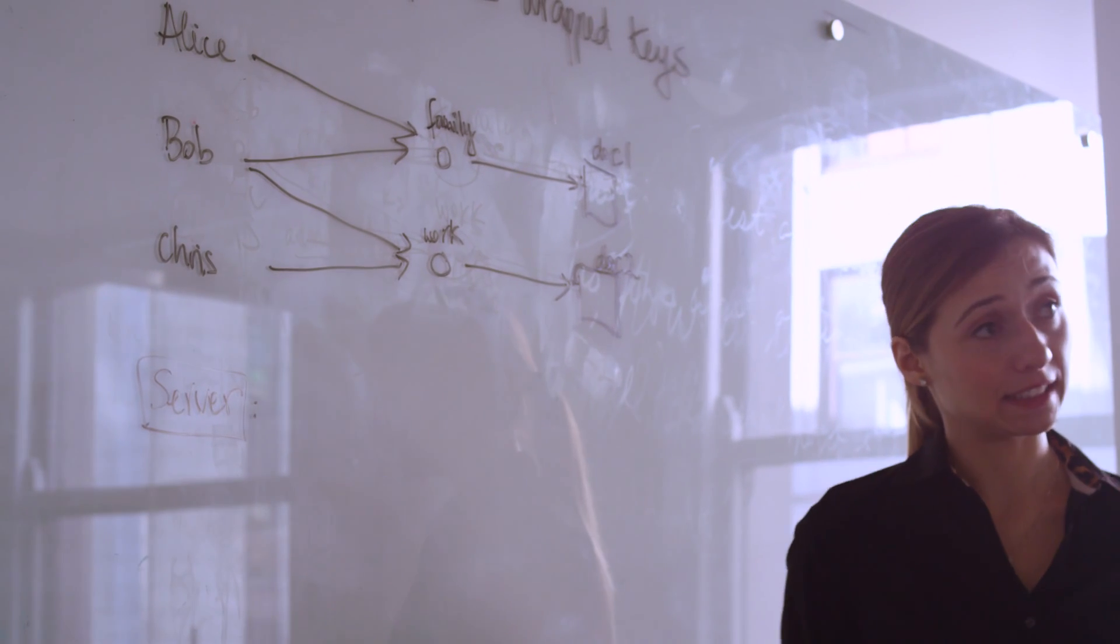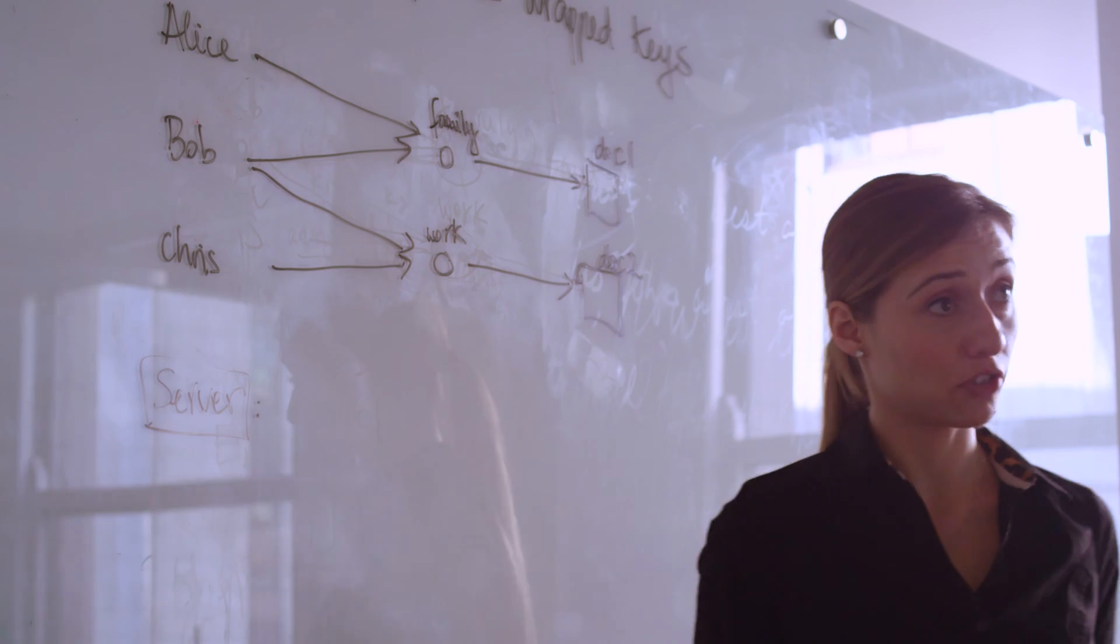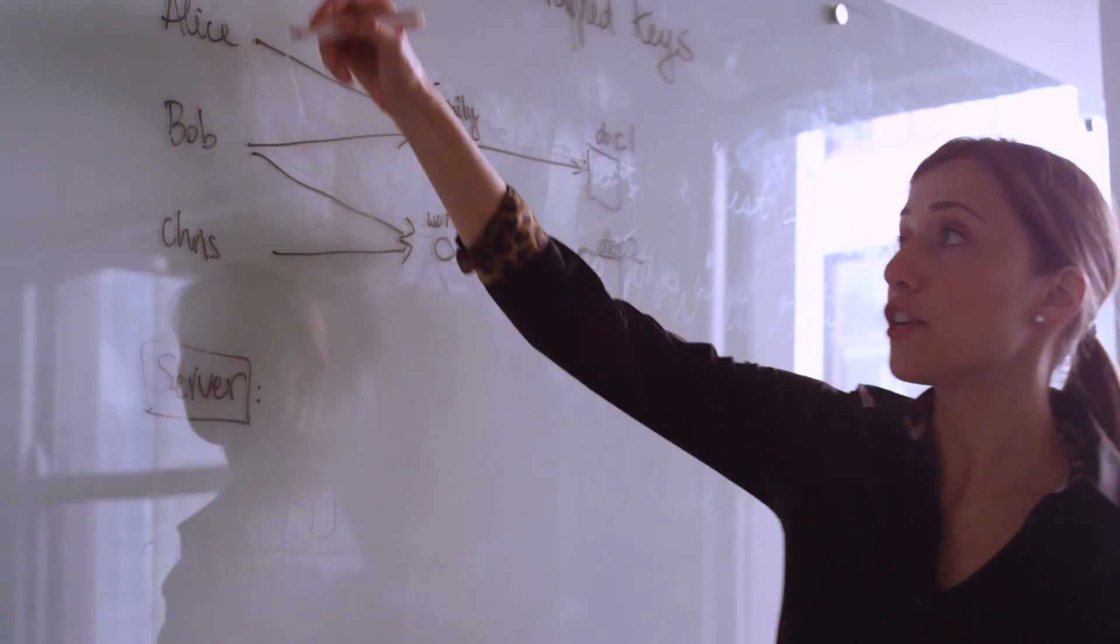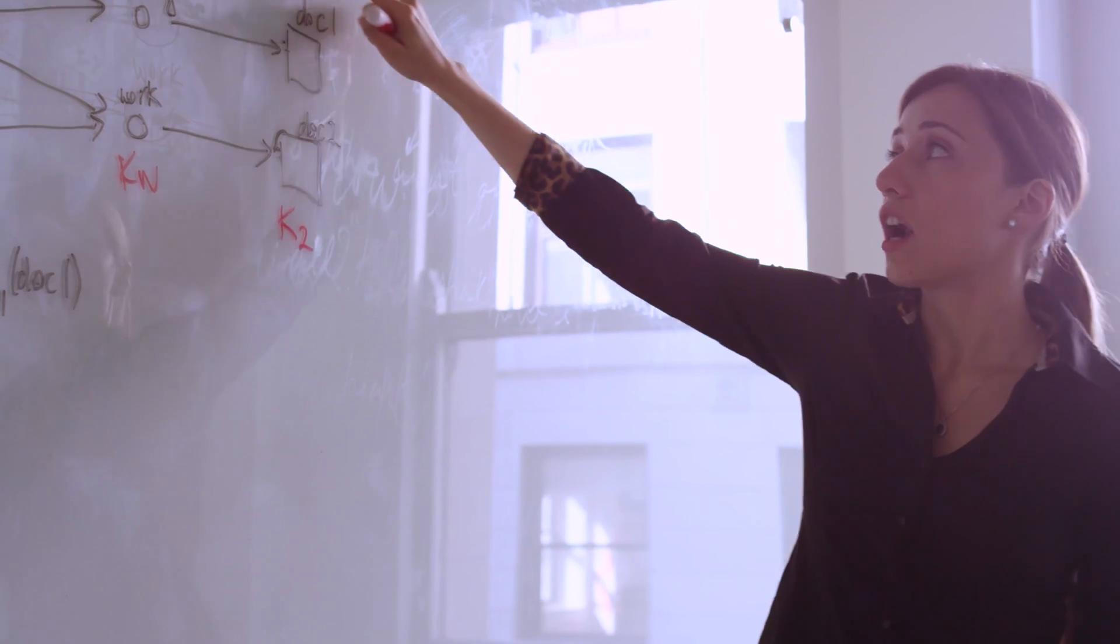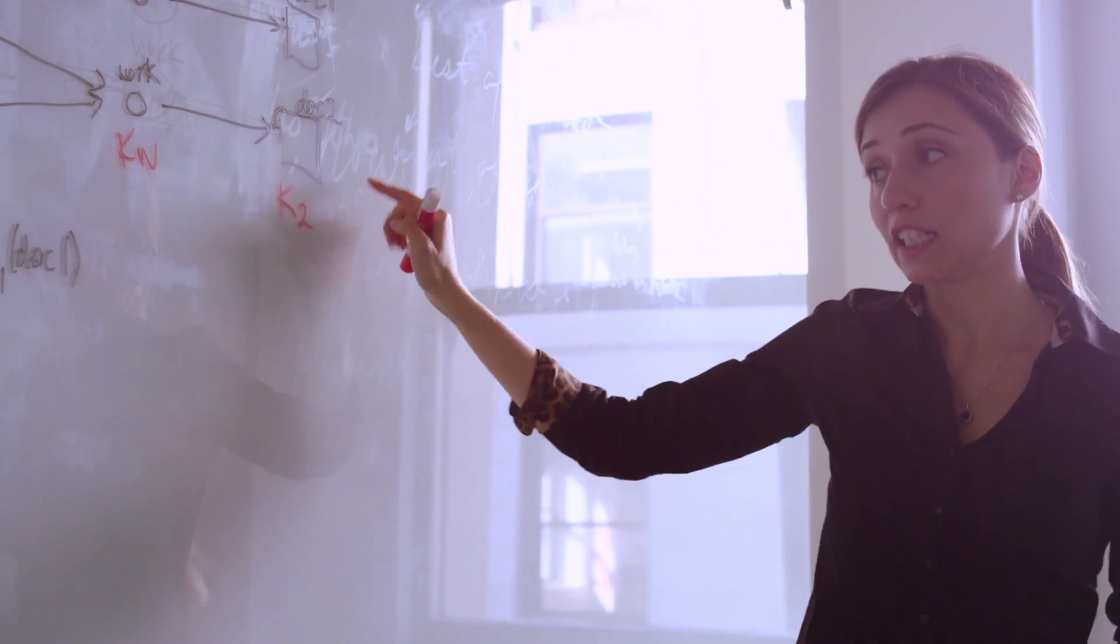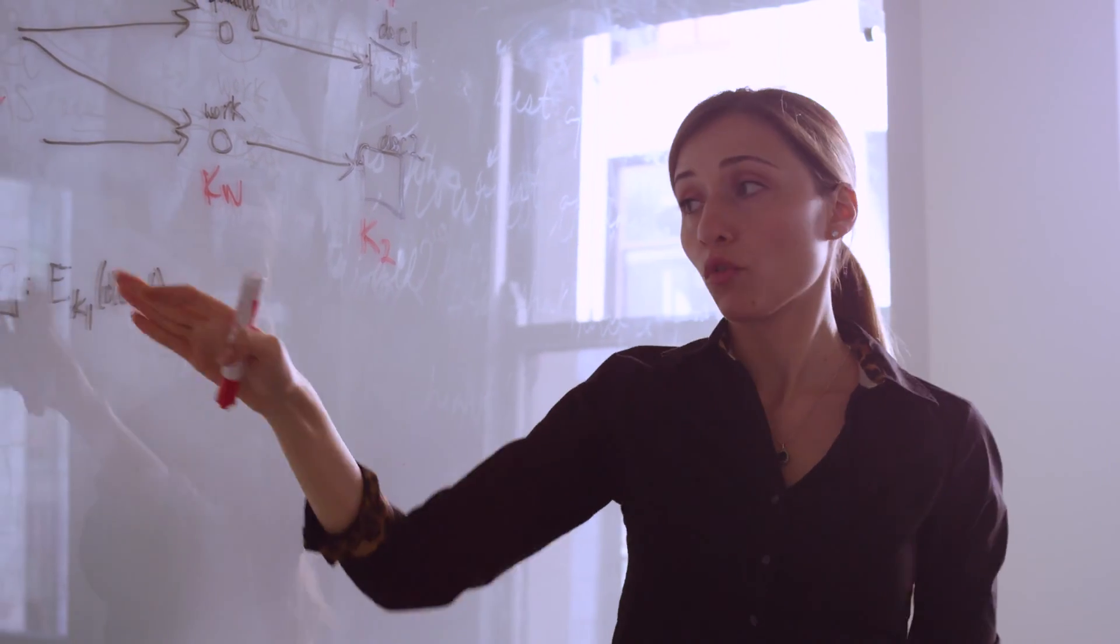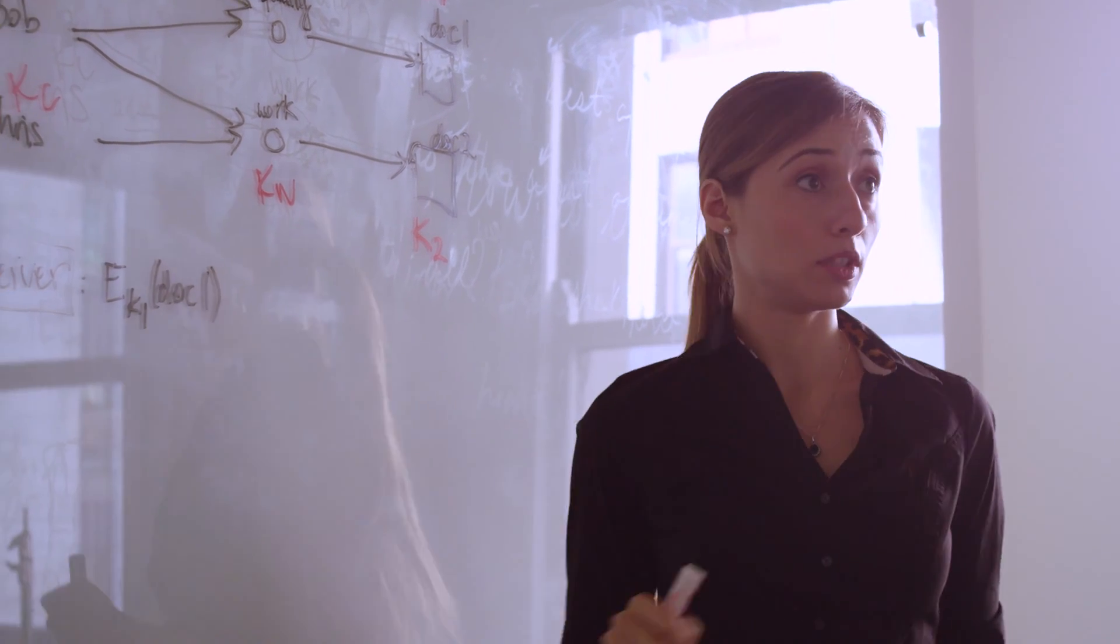The way Prevail enforces this access control is with a graph of keys. First, every node has its own key. These documents are encrypted with the respective keys and stored encrypted at the server. For example, document 1 is encrypted with key 1.